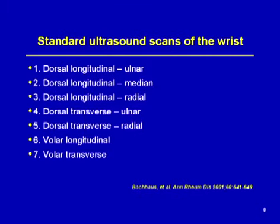Let's first talk about the standard ultrasound scans of the wrist. There are seven standard scans that might be obtained. Sometimes you may do a limited ultrasound evaluation of the wrist where you don't have to obtain all the images, mainly focusing on, for example, median nerve pathology. The standard scans include a dorsal longitudinal scan looking at the ulnar, then the radial aspect, and going in between that region looking at the median aspect of the wrist. Then we'll go transverse and mainly focus on the ulnar and the radial aspects, and then we'll look at the volar aspects, both longitudinal and transverse.